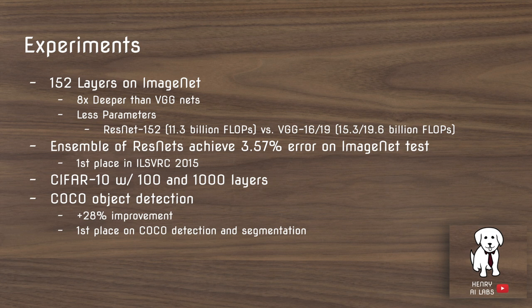In the ResNet experiments, they test the 152-layer net on ImageNet and achieve state-of-the-art results. This is eight times deeper than VGG nets, but in terms of floating point operations, it actually has less computation than VGG-19, as shown by the billion FLOPs metric. With an ensemble of ResNets, they achieve 3.57% error on the ImageNet test set, which is state-of-the-art.